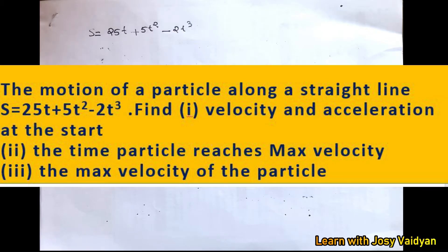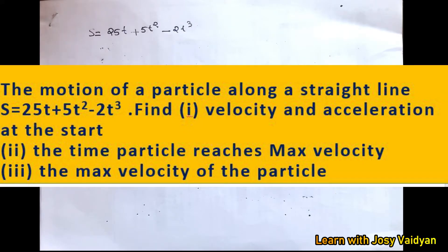The motion of a particle along a straight line is defined as s equal to 25t plus 5t squared minus 2t cubed, where s is in meters and t is in seconds. Find: first, the velocity and acceleration at the start; second, the time the particle reaches maximum velocity; third, the maximum velocity of the particle.